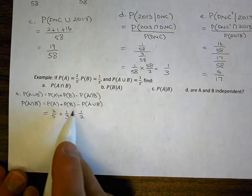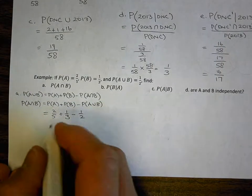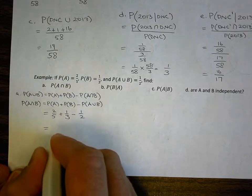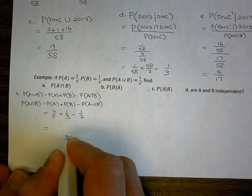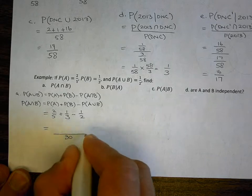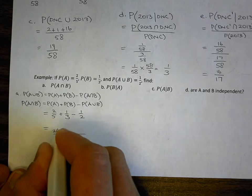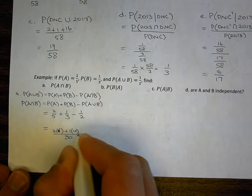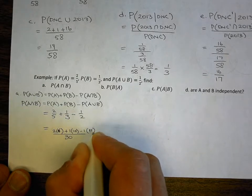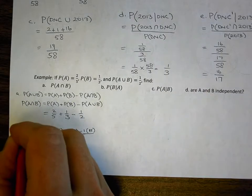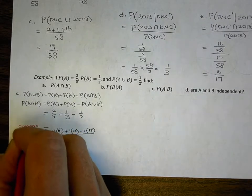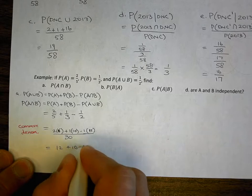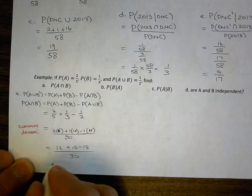Using a common denominator of 30: (2/5 = 12/30), (1/3 = 10/30), (1/2 = 15/30). So I get 12 + 10 − 15 over 30, which is 22 − 15 = 7/30.